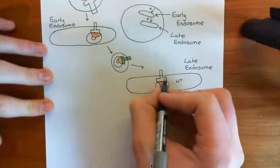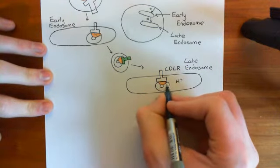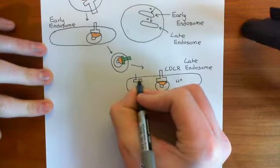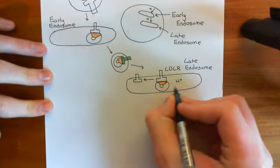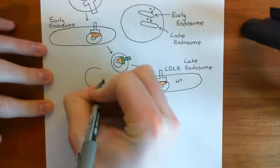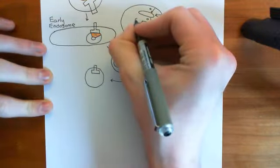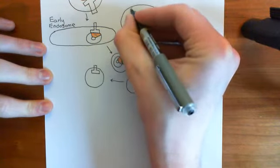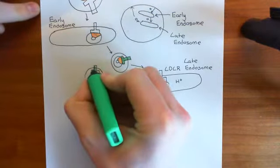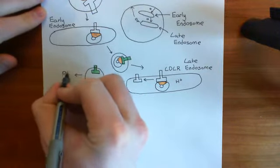In the late endosome, the LDL receptor is going to cleave away from the LDL particle and they will now separate. The LDL receptor goes one way, and vesicles will pinch off from the late endosome containing just the LDL receptor. These vesicles will then go back to the plasma membrane, returning the LDL receptor to the cell surface. This is a recycling process.